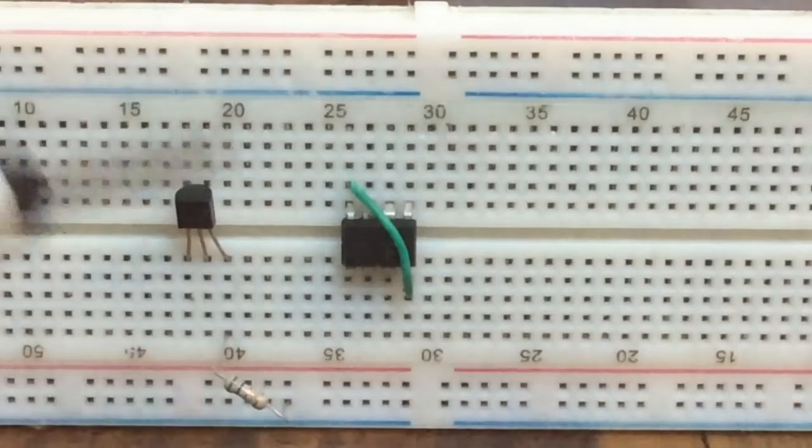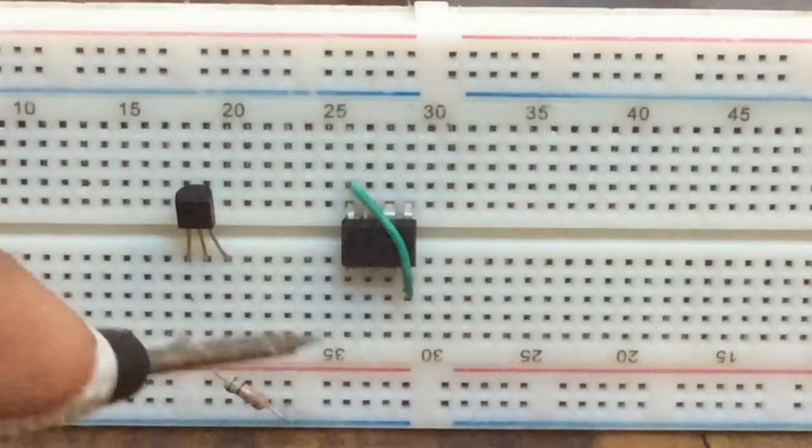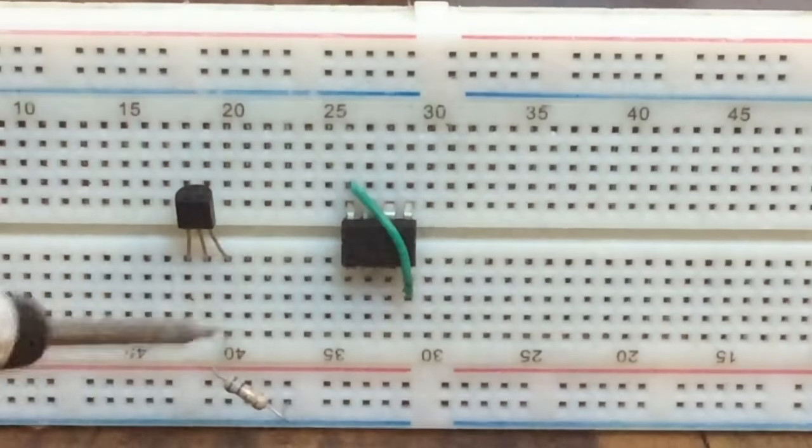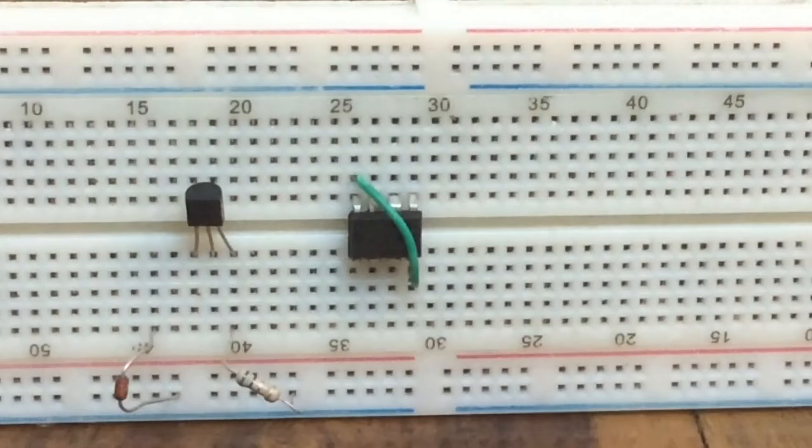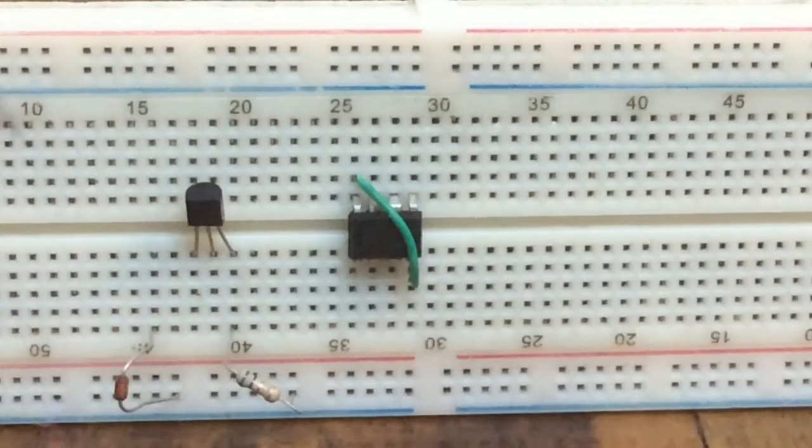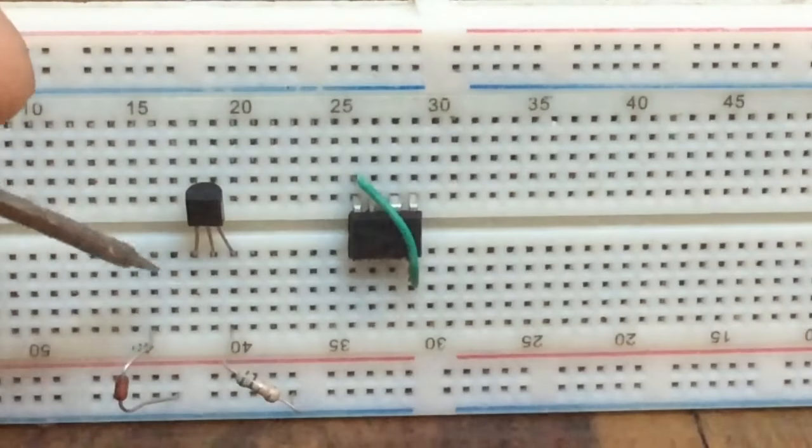Place the transistor on the breadboard with its emitter connected to the negative rail using a 5.6 ohm resistor. Place the first diode on the breadboard with one end connected to the negative rail and the other to the ground.